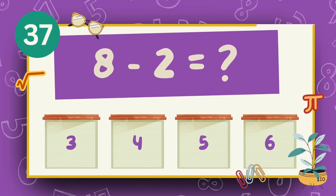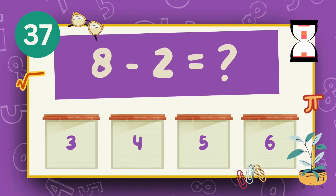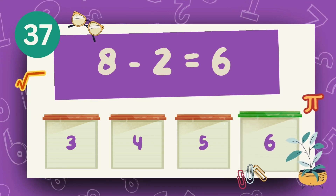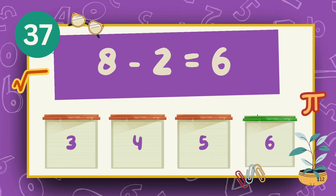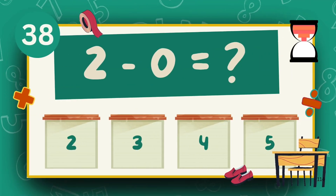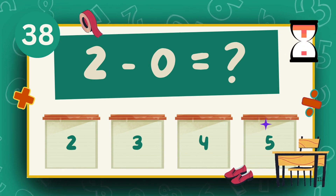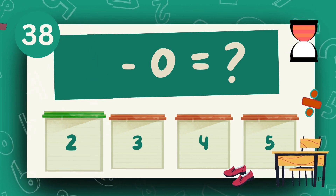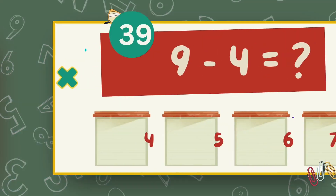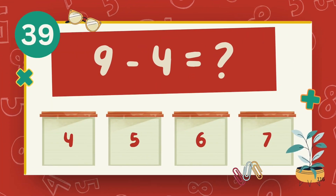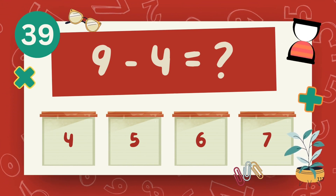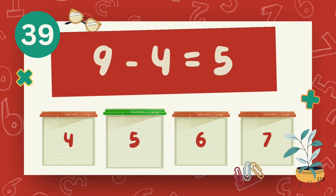What is 8 minus 2? The answer is 6. What is 2 minus 0? The answer is 2. What is 9 minus 4? The answer is 5.